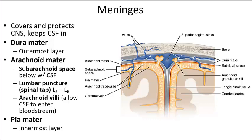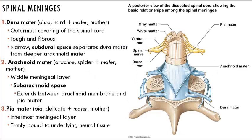The meninges of the spinal cord serve to cover and protect the delicate neural tissues from shock and damaging contact with surrounding bone. The spinal meninges consist of three layers: the outermost dura mater, which is a tough fibrous covering containing dense collagen fibers oriented along the longitudinal axis of the cord. Between the dura mater and the walls of the vertebral canal is the epidural space, which contains areolar connective tissue, blood vessels, and a protective padding of adipose tissue.